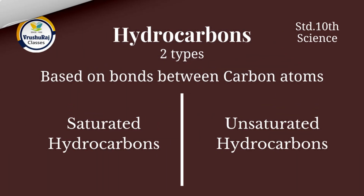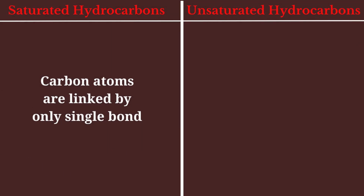Based on the bonds between these carbon atoms, hydrocarbons are of two types: saturated hydrocarbons and unsaturated hydrocarbons. Now let's see what is the difference between saturated hydrocarbons and unsaturated hydrocarbons.